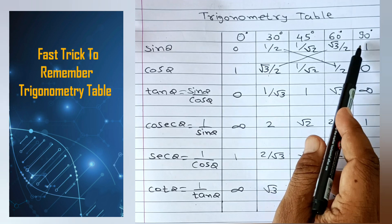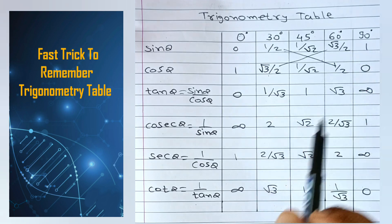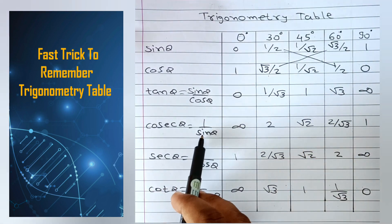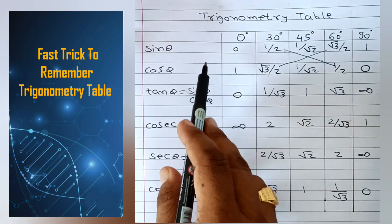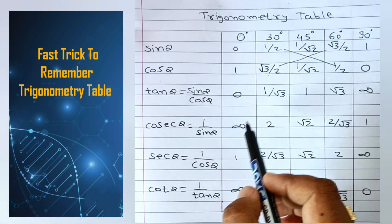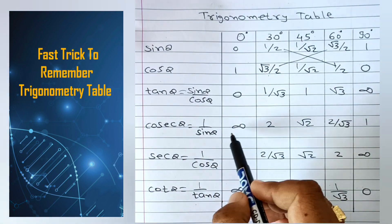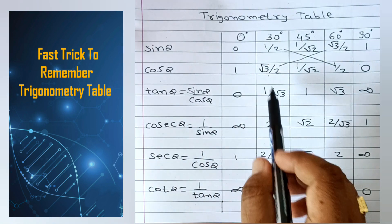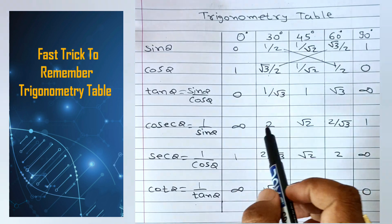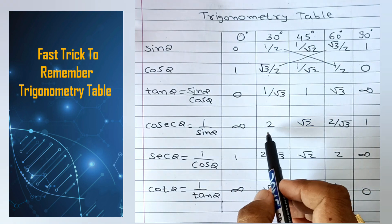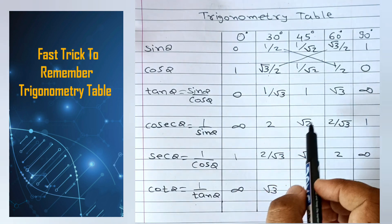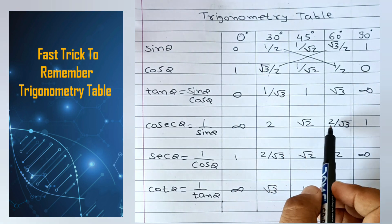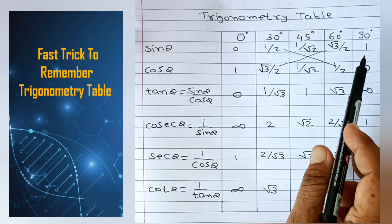Now cosec theta is 1 upon sin theta. So: 1 upon 0 is infinity; then 1 upon 1/2 is 2; then root 2; and 2 by root 3; and 1 divided by 1 is 1.